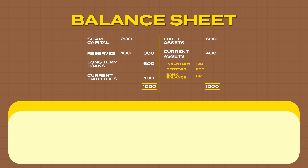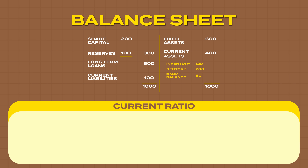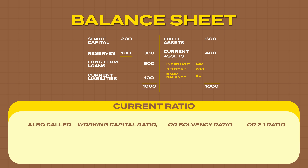The first ratio, and a very important one, is called current ratio. I'll give you the alternate names for these also. Current ratio is also called working capital ratio or solvency ratio. A healthy current ratio is 2 is to 1, so it's also called the 2 is to 1 ratio. The norm is incorporated in the name itself.